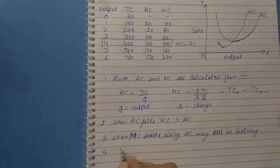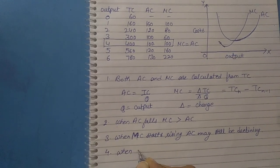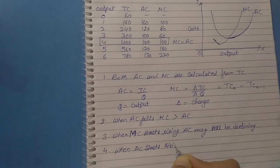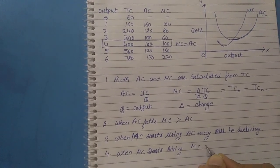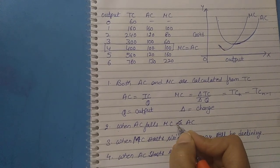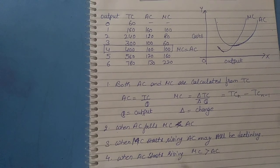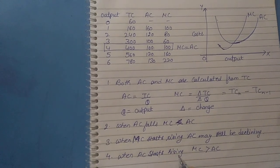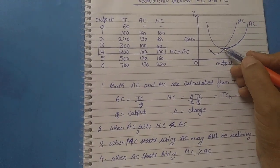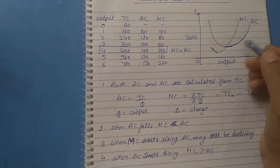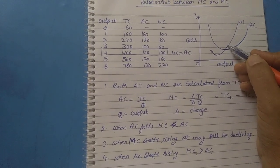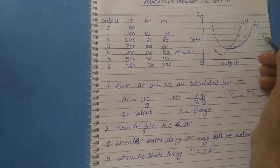The fourth point is: when AC starts rising, MC is greater than AC. As you can see, here the AC starts rising, but MC starts rising more rapidly, so MC is greater than AC.